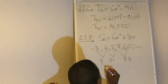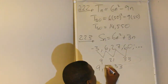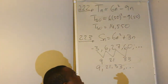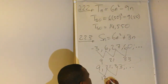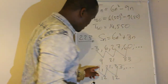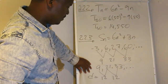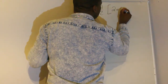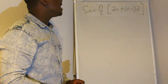What we should do is find the sum for this sequence — 9, 21, 33 — and then compare it to that. This is an arithmetic sequence. Find the difference, which is 12. You have the first term and the common difference, which is 12. To find the sum, use Sn equals n over 2 into 2a plus n minus 1 into d — the equation for finding the sum of an arithmetic sequence.